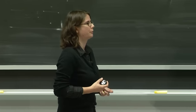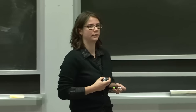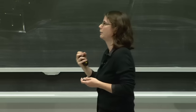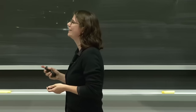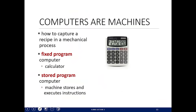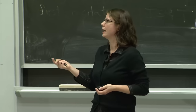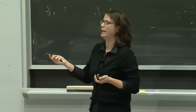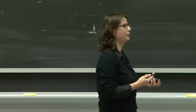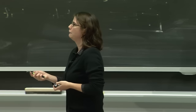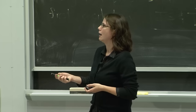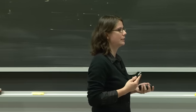We want to capture a recipe inside a computer. Historically, there were two different types of computers. The first were fixed program computers — like a basic calculator that only knows how to do addition, multiplication, subtraction, and division. You can't plot something or send email with it. If you wanted a machine that did another thing, you'd have to create a completely separate fixed program computer for that task.